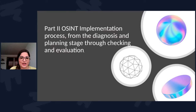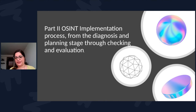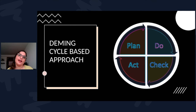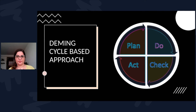Now I'll talk about how you're going to use OSINT to make all of this information come to you and make things easy. I frame this as a process from diagnosis through planning through evaluation. I use the Deming cycle approach — plan, do, check, act — and I add a preliminary diagnosis stage, though that could also be part of your plan stage.